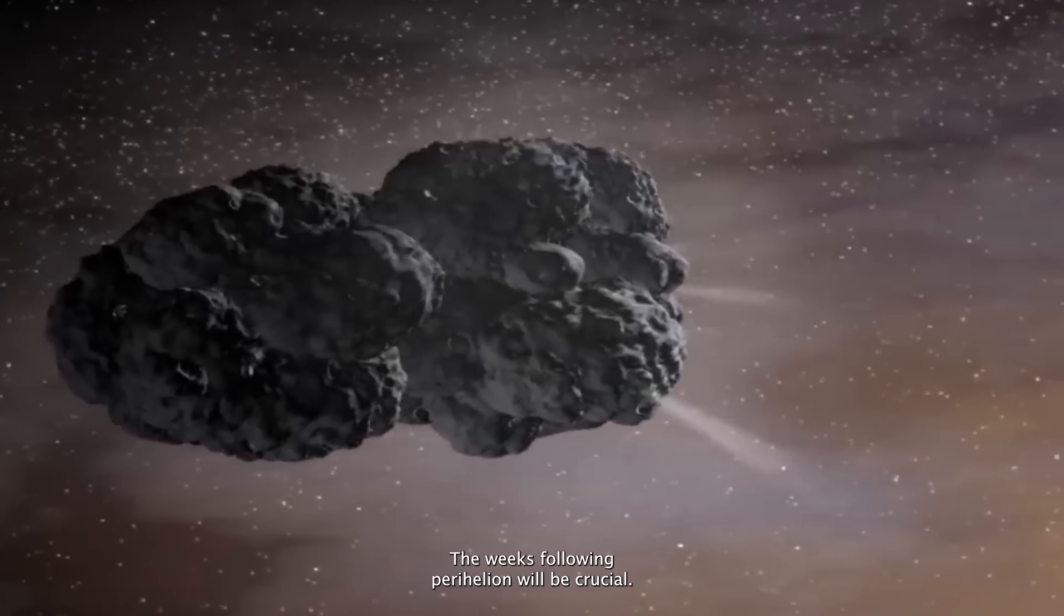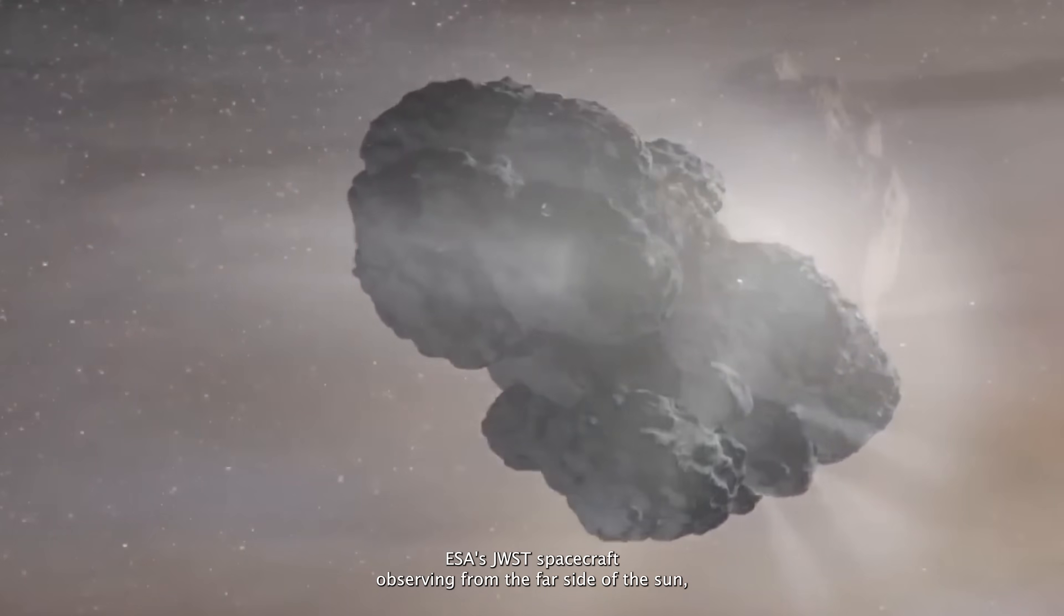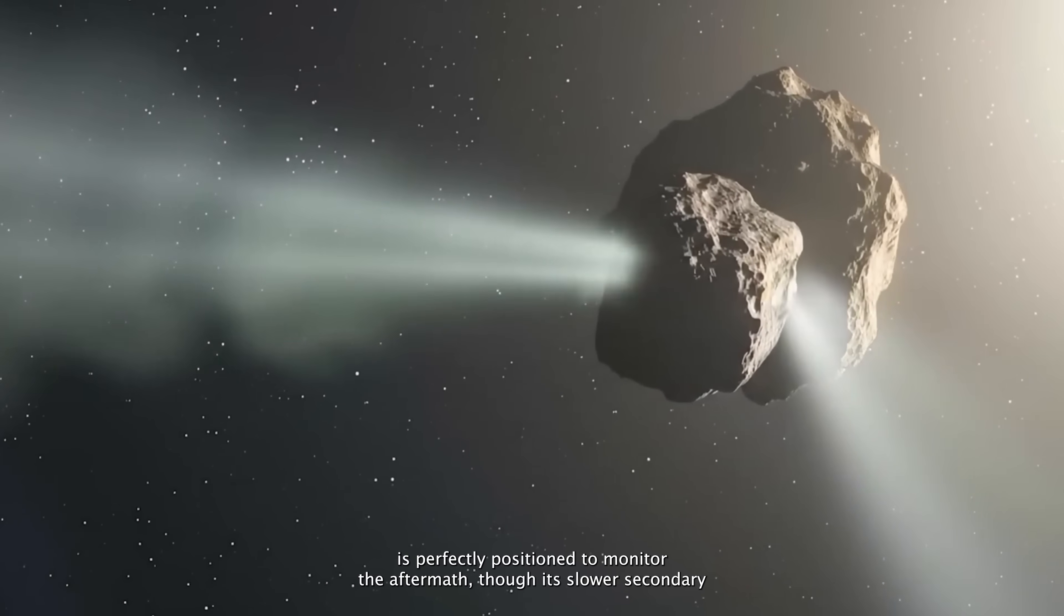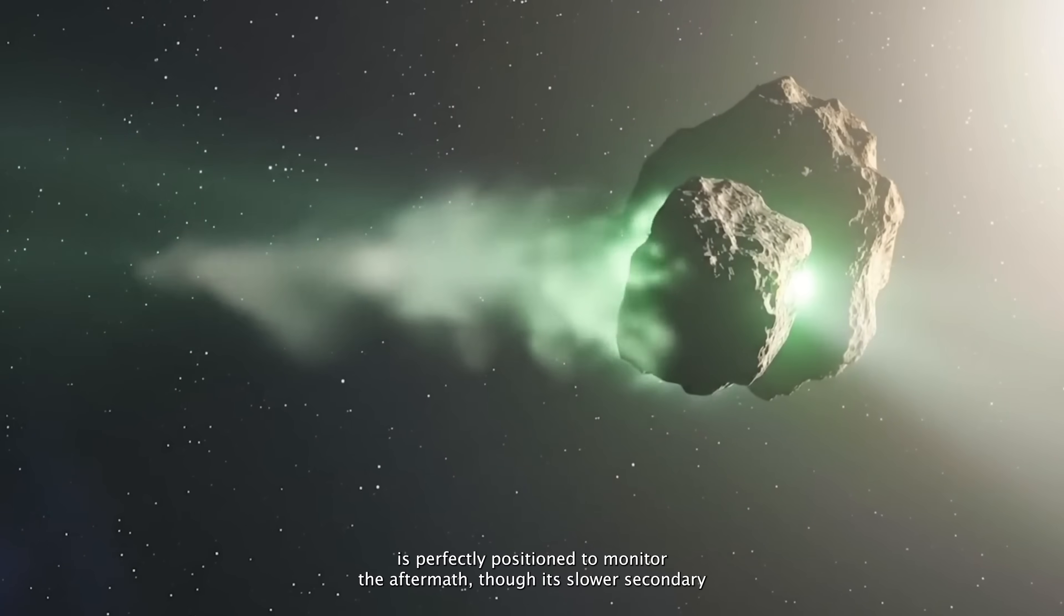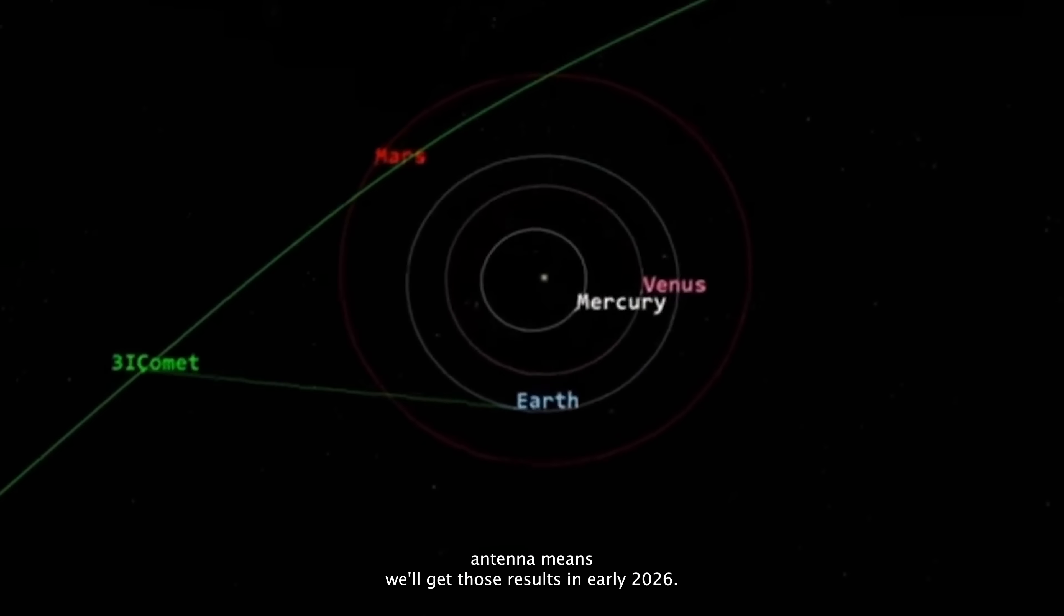The weeks following perihelion will be crucial. ESA's JUICE spacecraft, observing from the far side of the Sun, is perfectly positioned to monitor the aftermath. Though its slower secondary antenna means we'll get those results in early 2026.